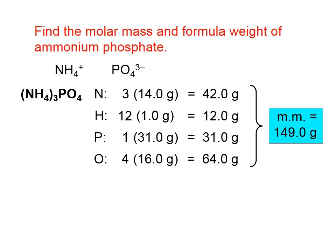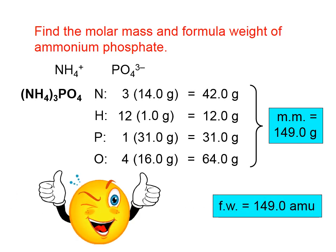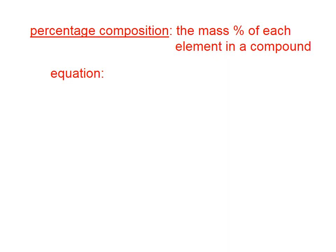When we find the formula weight, the formula weight has the same numerical value as the molar mass, except instead of dealing with a mole of ammonium phosphate, we're simply dealing with a single formula unit. You might think of it as a single molecule. 3 nitrogen atoms, 12 hydrogen atoms, 1 phosphorus atom, 4 oxygen atoms. And if we had atoms, wouldn't these units here not be grams, but rather would be AMUs?